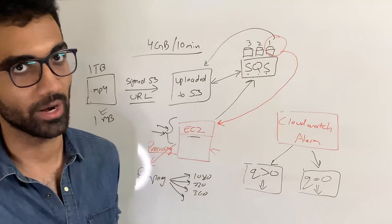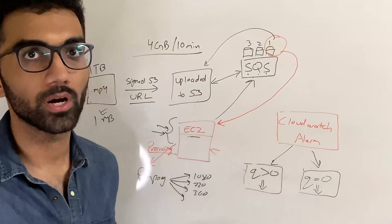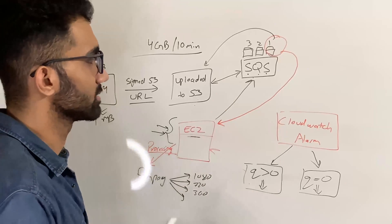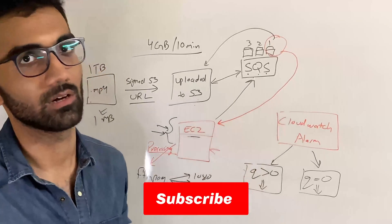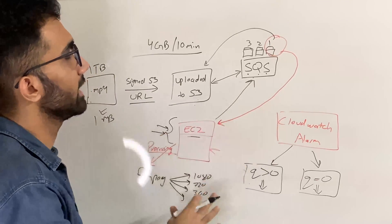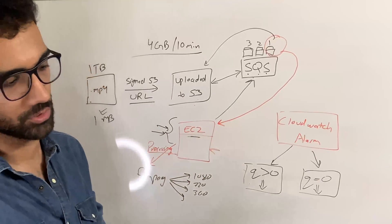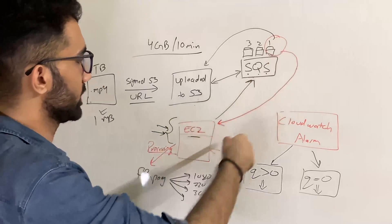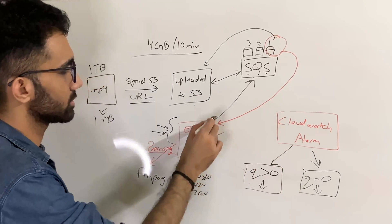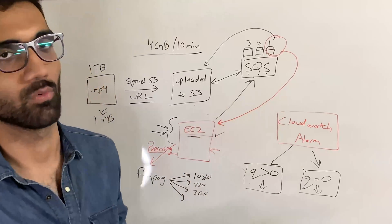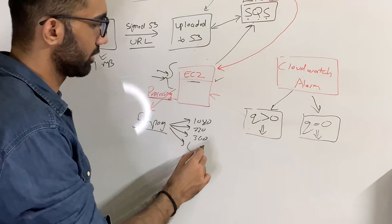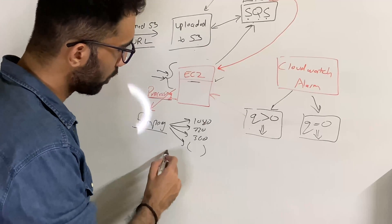EC2 launches FFmpeg — we use FFmpeg for processing — and converts the video into multiple formats: 1080p, 720p, 360p, and more for adaptive streaming with HLS. This happens inside EC2 since it has access to the original file via S3. There's no component here that would break under load, given AWS itself is up.